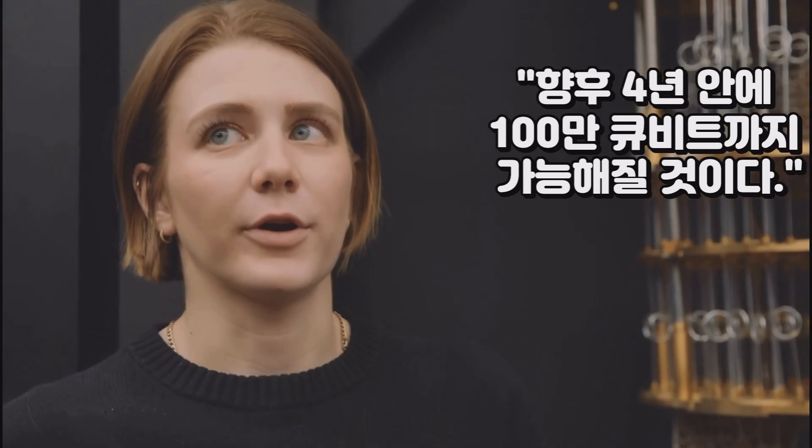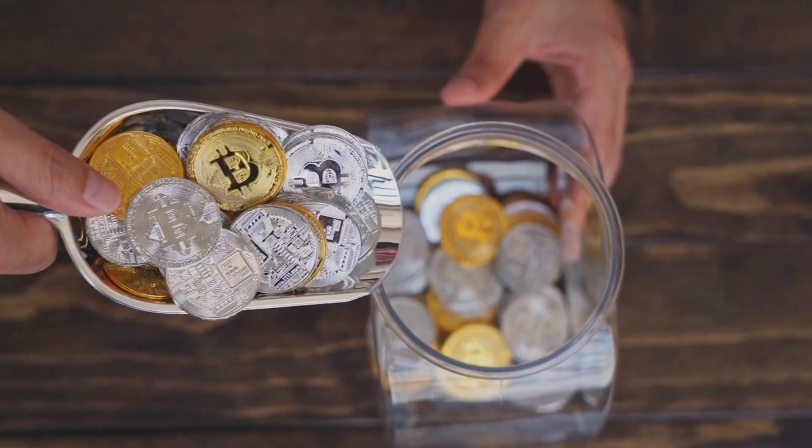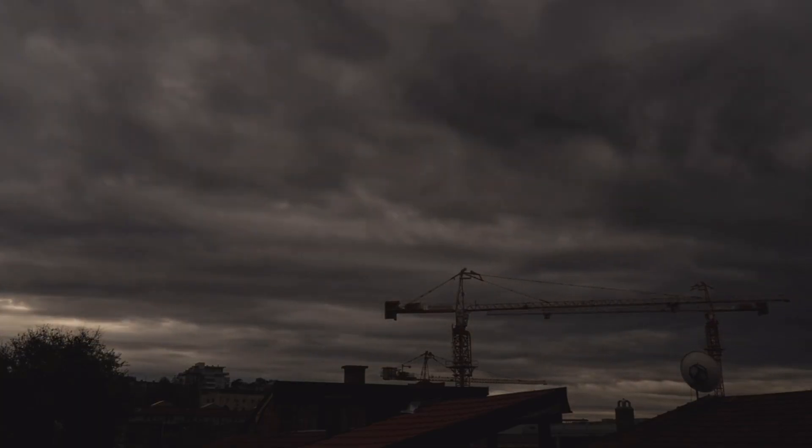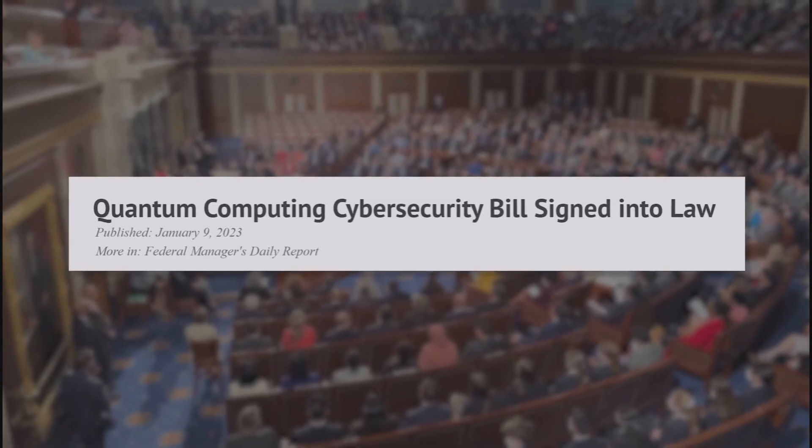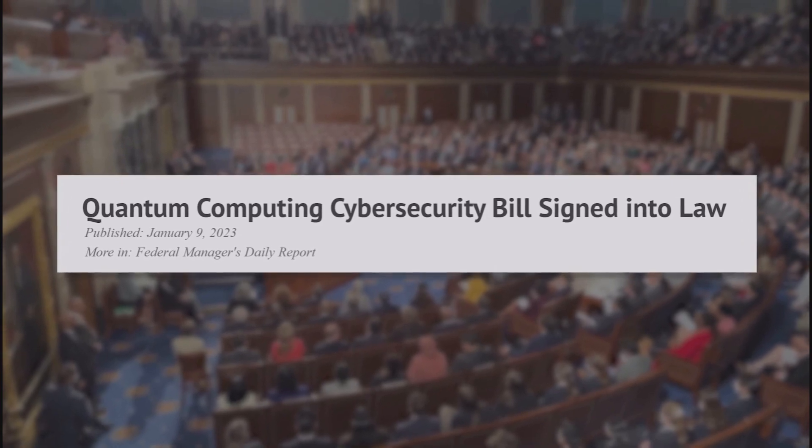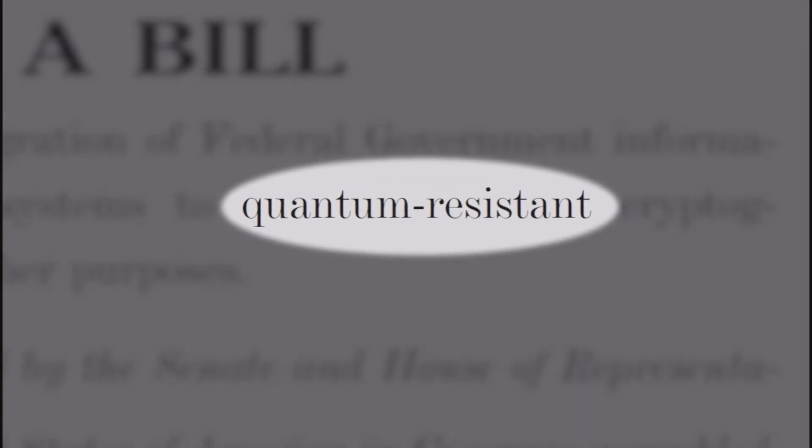향후 4년 안에는 100만 큐비트까지 달성할 수 있을 것이라고 하는데 이러한 양자 우위로의 도약과 배경 속에서 현재 기술의 디지털 화폐 영역에는 어두운 그림자가 드리워질 것으로 예측된다. 실제로 2023년 1월 9일에 이런 위험성을 인지한 미국 국회에서는 모든 기관이 현재의 암호화 방식에서 새로운 방식으로 전환하도록 의무화하는 법안을 통과시켰다.